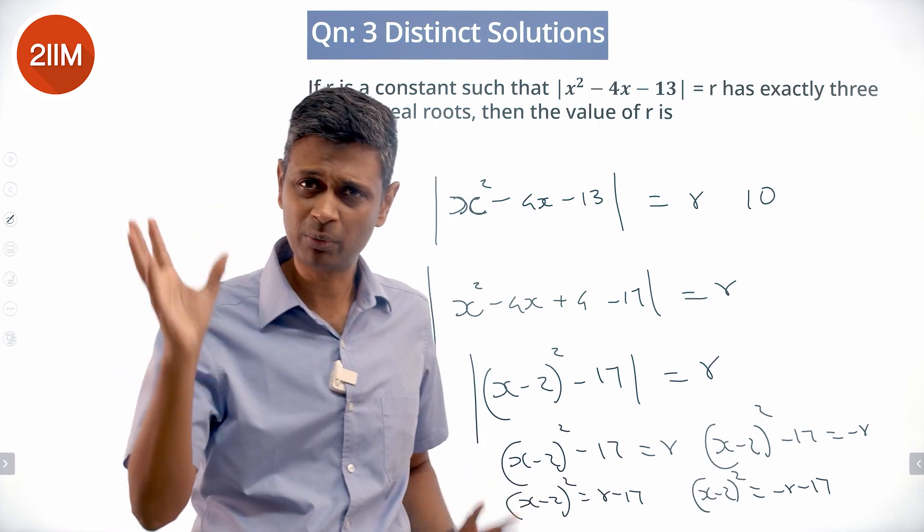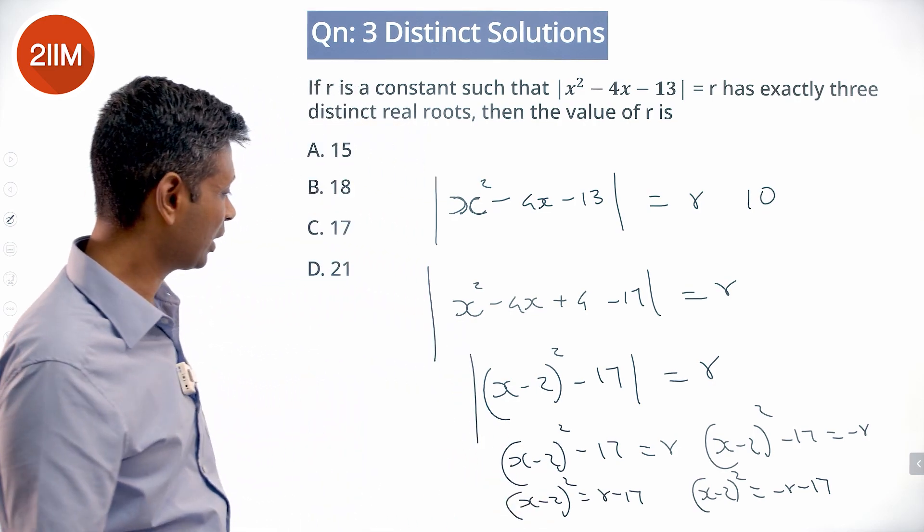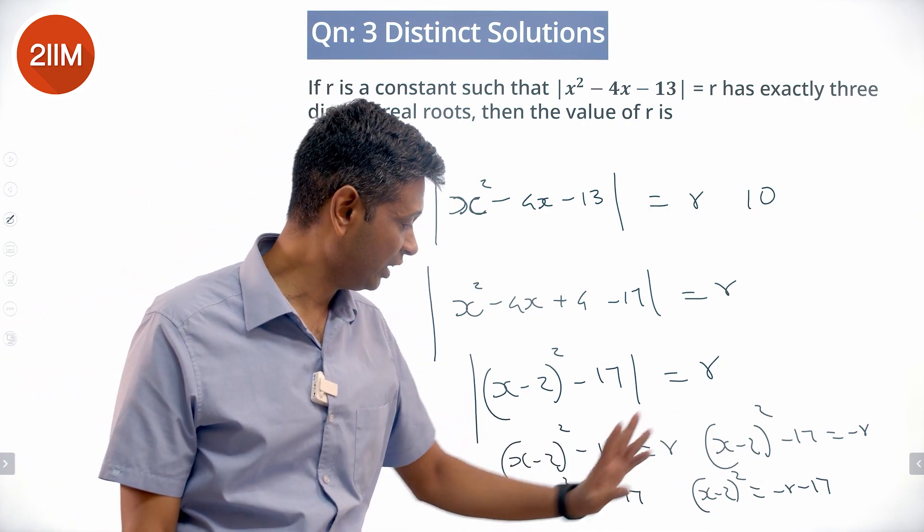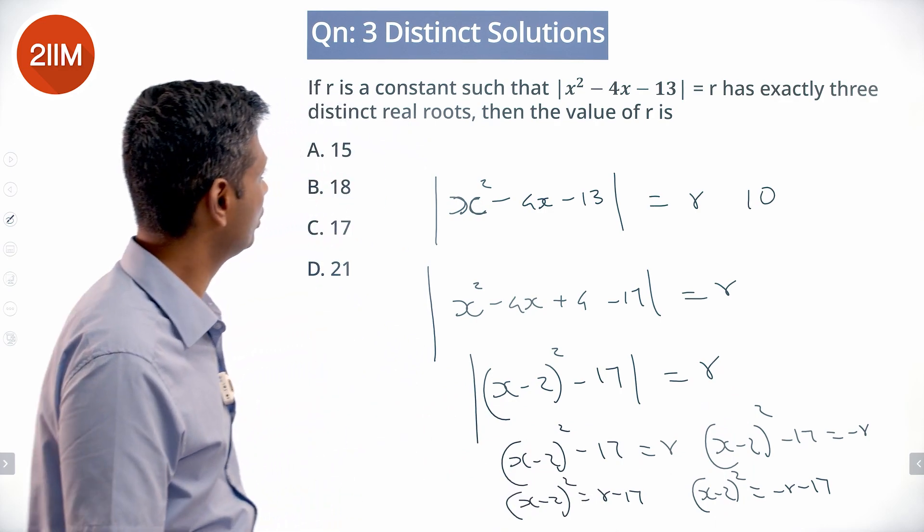This will give us two roots. This could give us two roots. One of these two gives us only one root. That's effectively what we are trying to solve for. When will that work? One of these has to go to 0. If r were 17, this will go to 0.